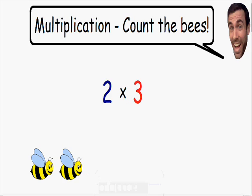Here we have 2 times 3, which means 2 is being multiplied by 3. So we're starting with the number 2, which is why we have two b's. And these two b's are being multiplied by 3.